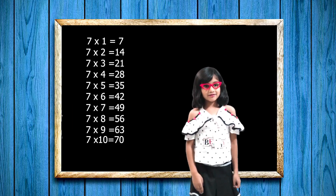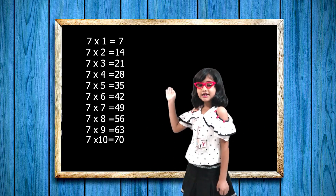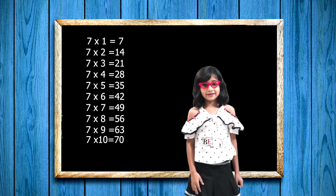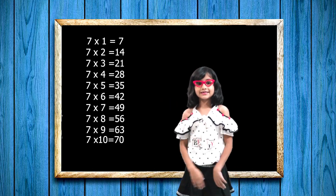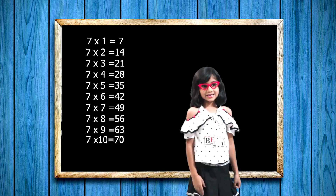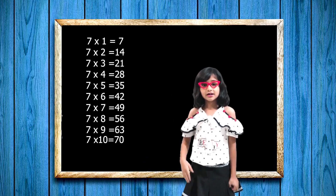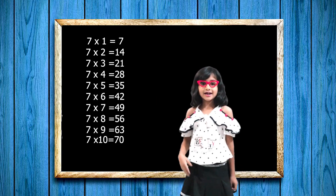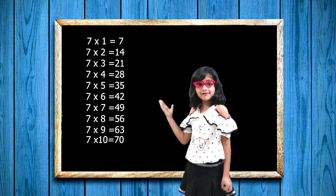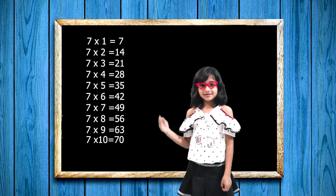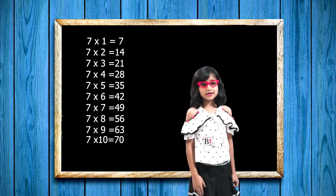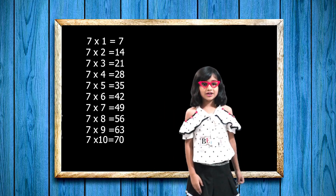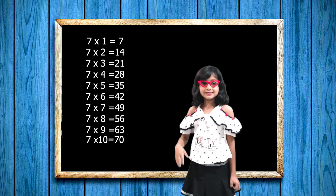So guys, let's repeat. Seven one's a seven, seven two's a fourteen, seven three's a twenty-one, seven four's a twenty-eight, seven five's a thirty-five, seven six's a forty-two, seven seven's a forty-nine, seven eight's a fifty-six, seven nine's a sixty-three, seven ten's a seventy.